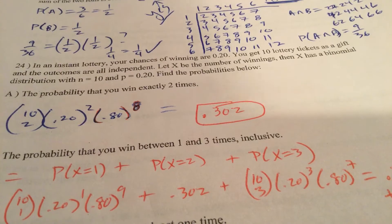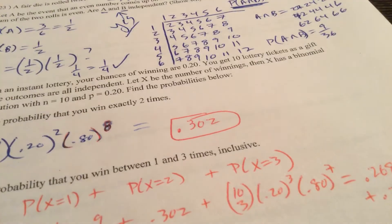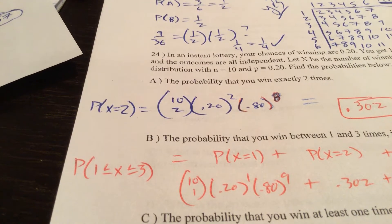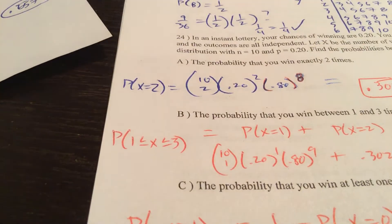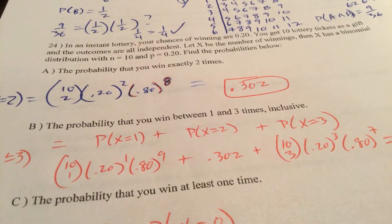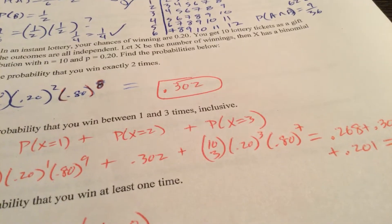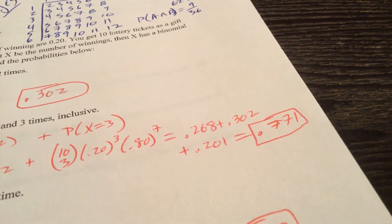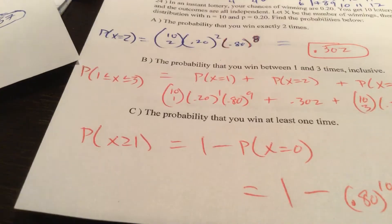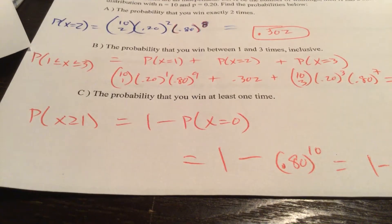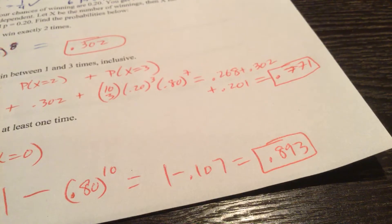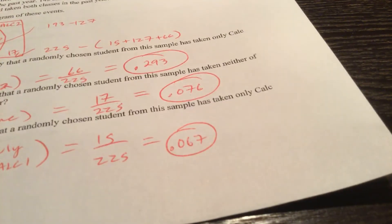Instant lottery, a chance of winning is 0.20. You're going to choose 10. What's the probability that you win exactly two times? 10 choose two times probability of success to the second probability of failure to the eighth. Round all probabilities to three decimals. What's the probability that you win between one and three times inclusive? There's my statement. I already know that the probability X is two is 0.302. There's probability X is one. Probability statement for X equals three. What's the probability you win at least one time. Probability you win at least one time is usually always best done by one minus the probability you win none. 0.80 to the tenth. There's your probability you win at least once.